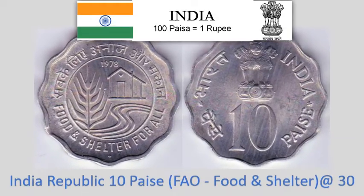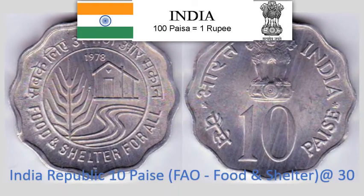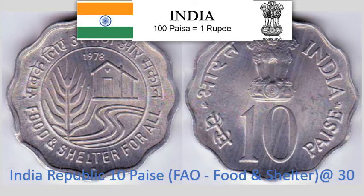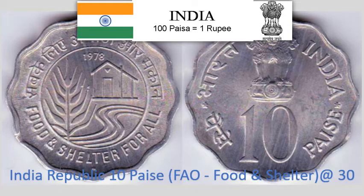India Republic 10 Paise 1978 — Circulating Commemorative Coin, FAO Planned Families, Food and Shelter. 2.3 gram Aluminium scalloped coin with 12 notches, 26 mm diameter. Krause Reference No. 32. Approximate market value Rs. 30.